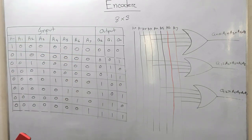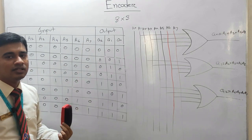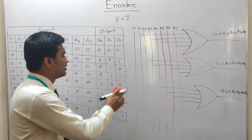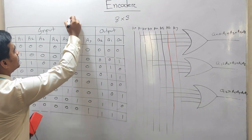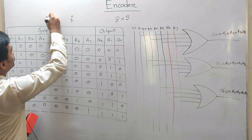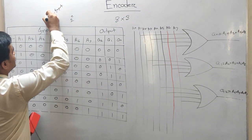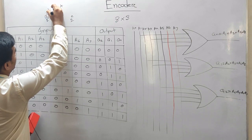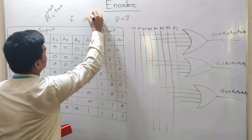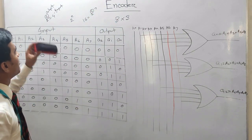A5, A6, A7 — so you have to answer the question: what output does the encoder have for 8 inputs? The output is 3 bits. So the output is determined by 2 to the power n. The input is 8, and the output is 3 lines. So if we have 8 inputs, we have 3-bit output.